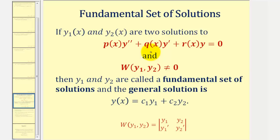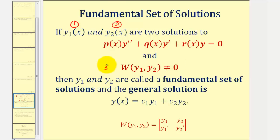There are three parts to this verification. We'll first verify that y₁(x) is a solution, then verify that y₂(x) is a solution, and finally verify that the Wronskian does not equal zero over the entire interval. If all of these are true, then y₁ and y₂ form a fundamental set of solutions and we can form the general solution.